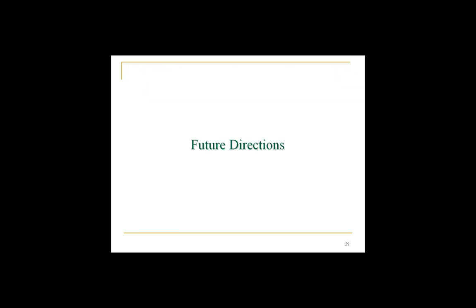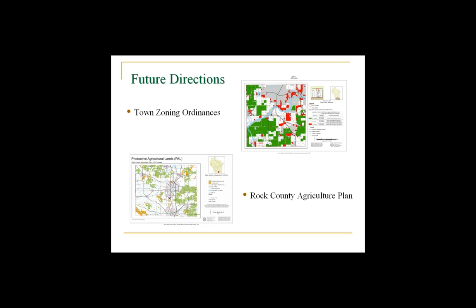In terms of future directions, this idea of GIS and geodesign is really catching on in Rock County. A few towns are actually looking at using this approach to revise and update their ordinances with the intention of prioritizing their best farmland for protection. At the county level, we're looking at using it for our comprehensive agricultural plan that lays out a vision for agriculture for Rock County over the next 20 years. So the idea of GIS, geodesign, and farmland preservation planning, starting with our PACE program, has really taken hold.